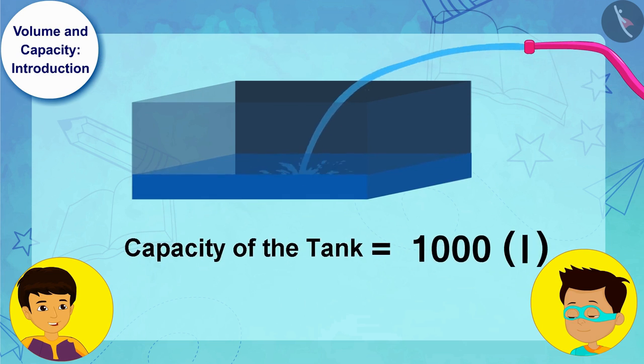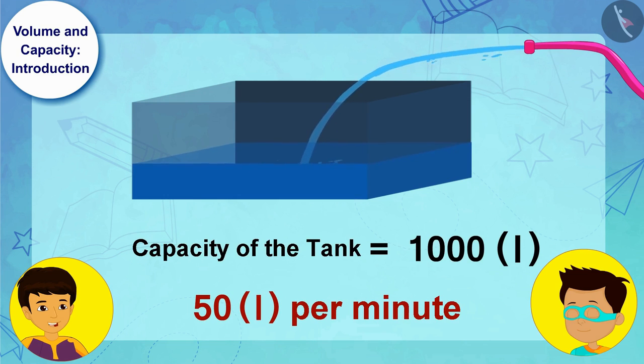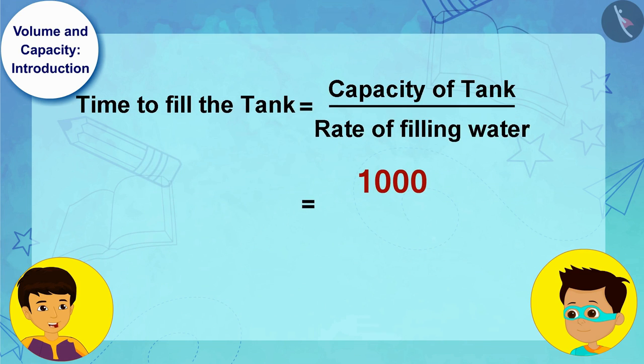The capacity of the tank is 1000 liters, and the pipe is filling water at the rate of 50 liters per minute. This means that the pipe will take 1000 ÷ 50, or 20 minutes, to fill the tank completely.